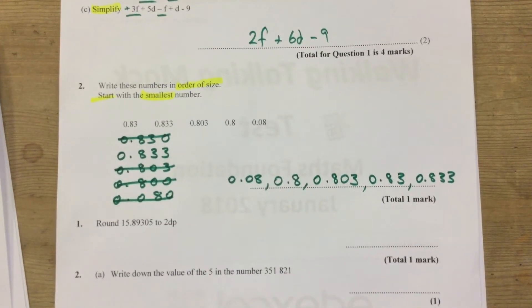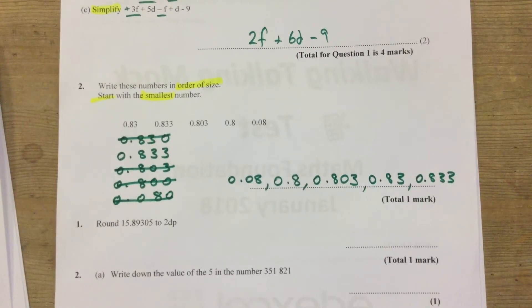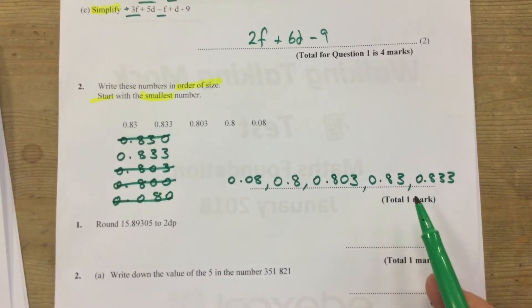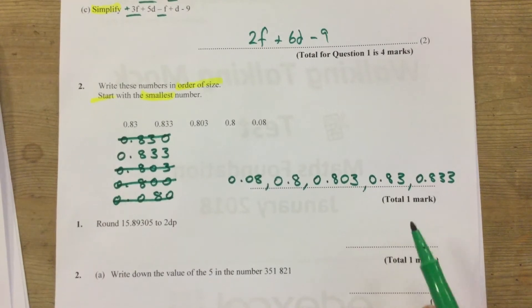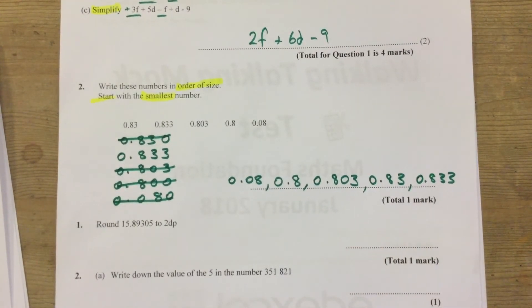Purposefully really similar to the one we did previously, but you can see how there could be variations on that, starting with the largest, slightly different numbers. But if you follow that process, they should all be just as accessible.